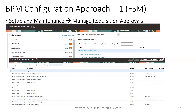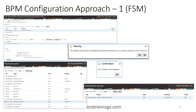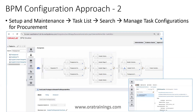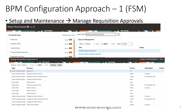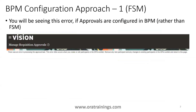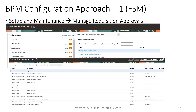An important caveat about these two approaches: if you are using the FSM approach, any modifications you make here will be copied to the BPM workflow. However, the reverse is not true — if you modify the approval workflow using Manage Task Configuration for Procurement (the BPM approach) and then try to view the rules in Manage Requisition Approvals, you will not be able to find them and will get an error. Always stick to one approach consistently.